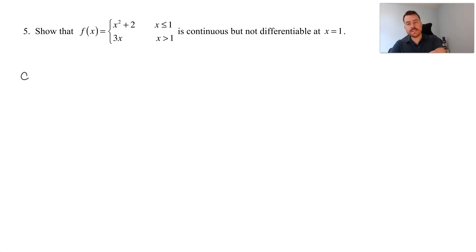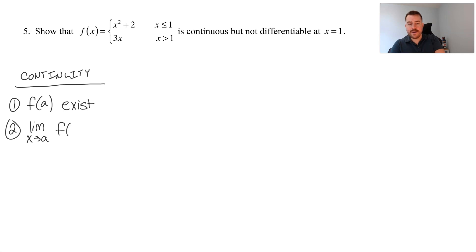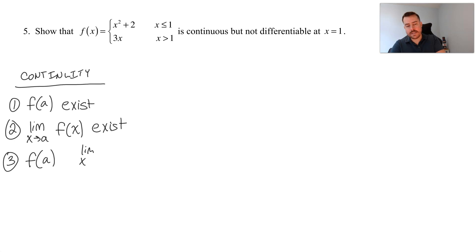For continuity, we want to remember a few things. A function is continuous if it meets three criteria: one, f of a has to exist; two, the limit as x approaches a of f of x must exist; and three, those two values — f of a and the limit as x approaches a of f of x — must be equal.